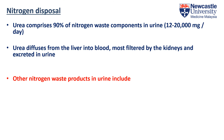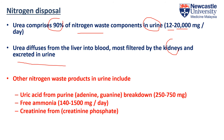Urea comprises up to 90 percent of nitrogen waste in urine, ranging from as low as 12 milligrams up to 20,000 milligrams per day depending on diet. Because urea is non-toxic, it is safely transported in the bloodstream to the kidneys and excreted in urine. Other nitrogen wastes in urine include uric acid (related to gout arthritis), free ammonia, and creatinine, which is the breakdown product from muscle tissue.